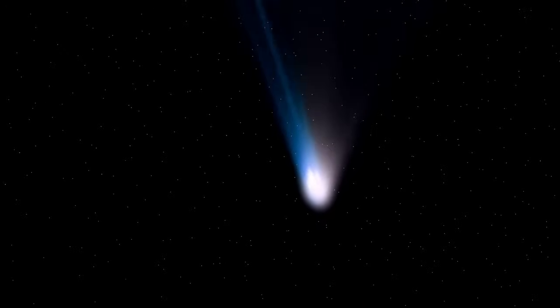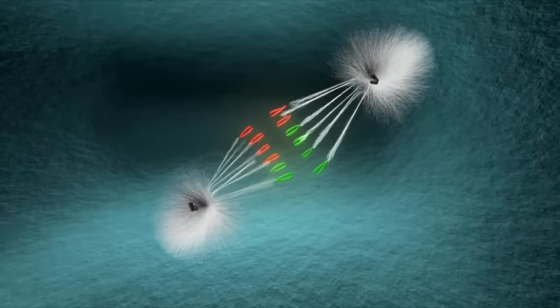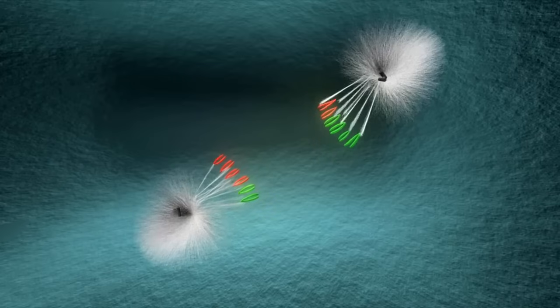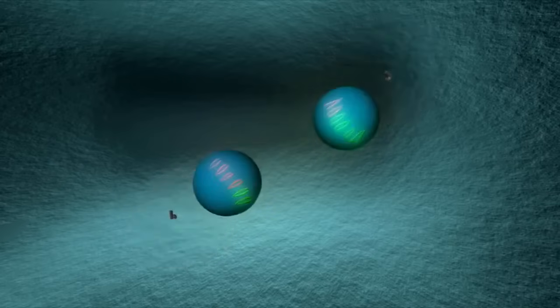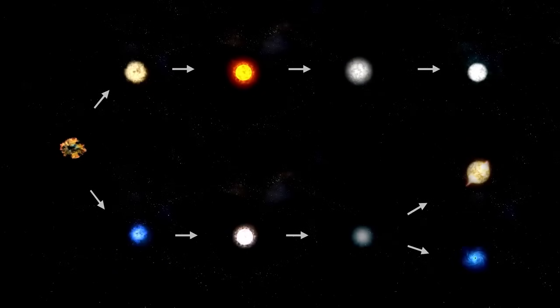The heliopause is a dynamic and ever-changing region where the outward pressure of the solar wind, a stream of charged particles emitted by the Sun, is finally overcome by the opposing pressure of the interstellar medium. This invisible yet crucial boundary acts as the outermost shield of our solar system, protecting it from incoming galactic cosmic rays and other forms of high-energy radiation originating from deep space.